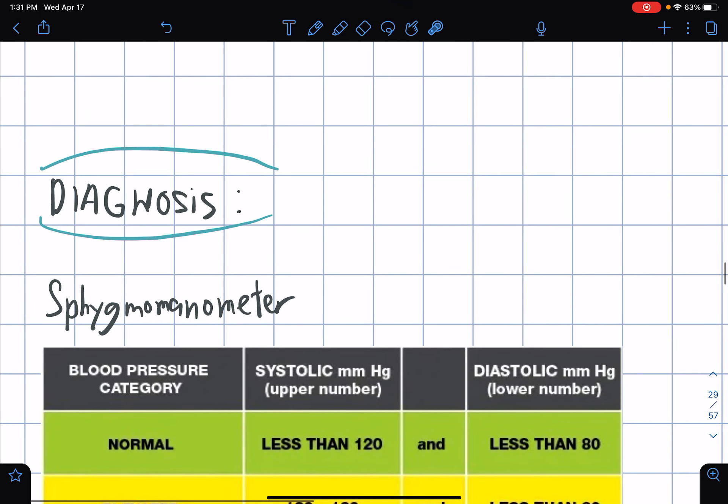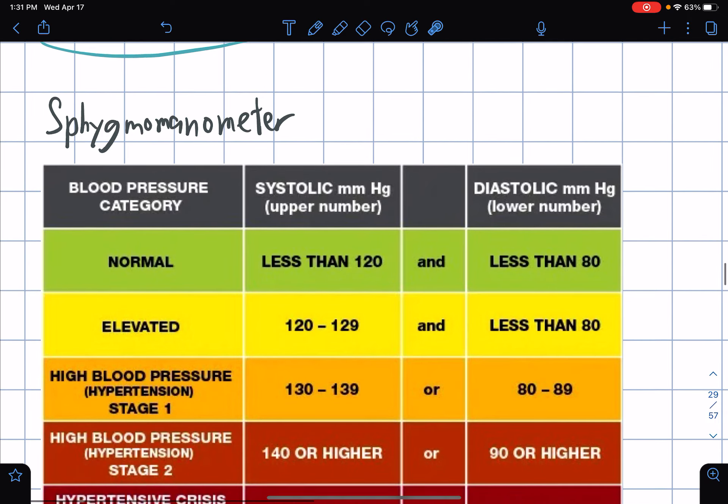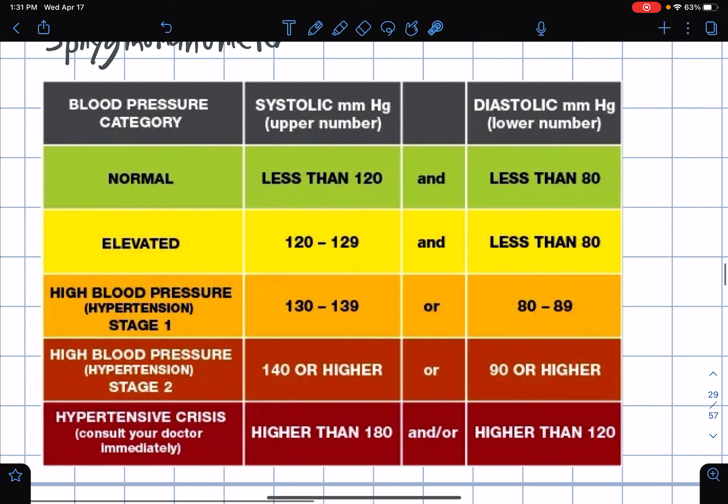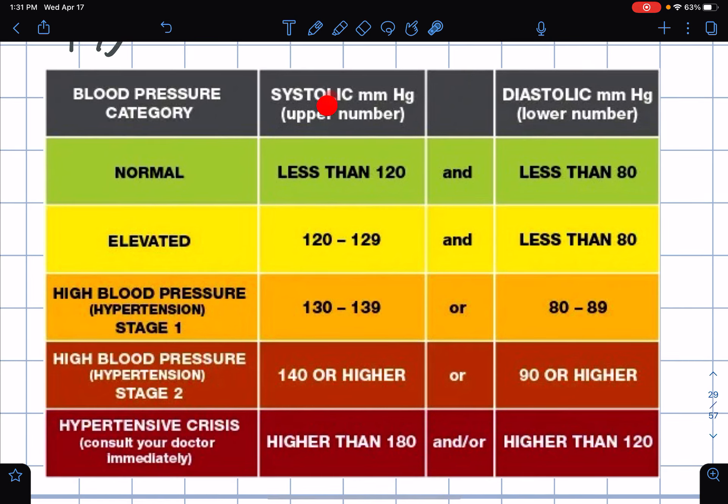Let's go with diagnosis. You can diagnose high blood pressure if you have a sphygmomanometer. For blood pressure, this is basically the chart or reading that says what kind of blood pressure is normal and what is not. Normal is systolic less than 120, diastolic less than 80. Elevated 120 to 129, diastolic less than 80.